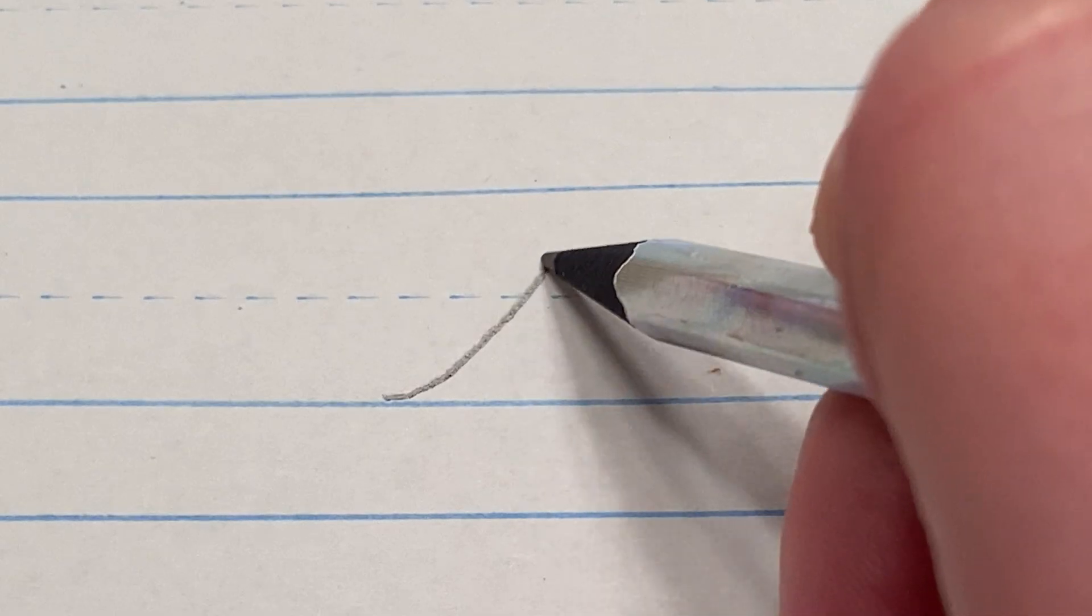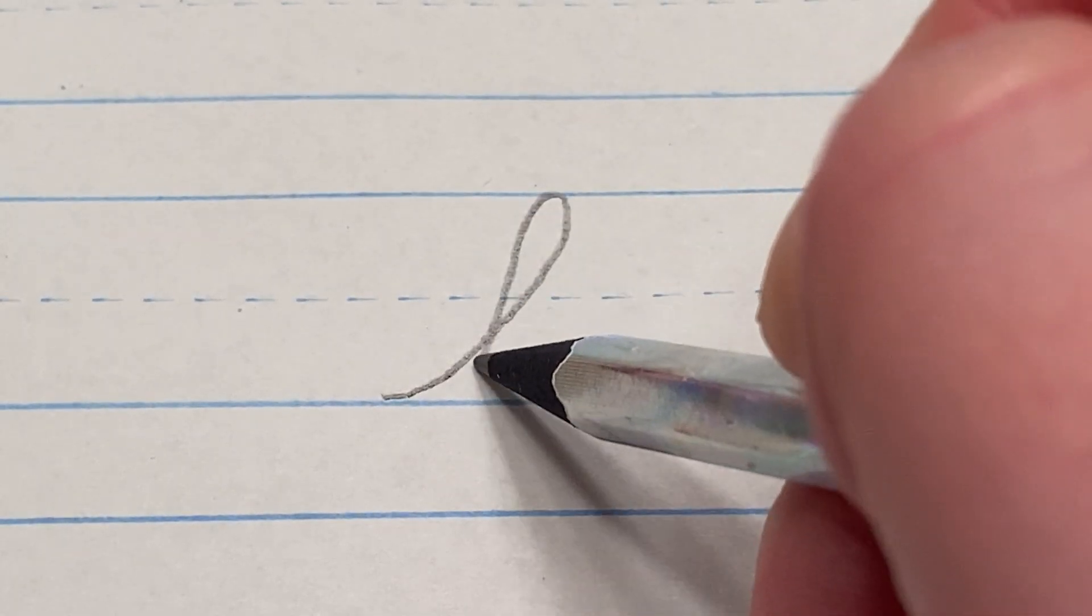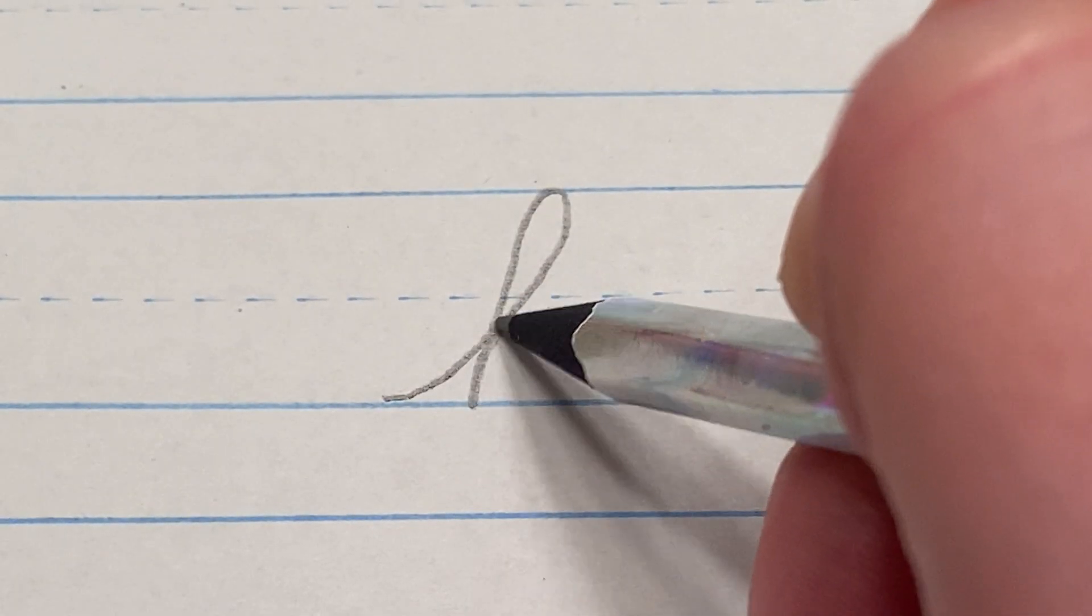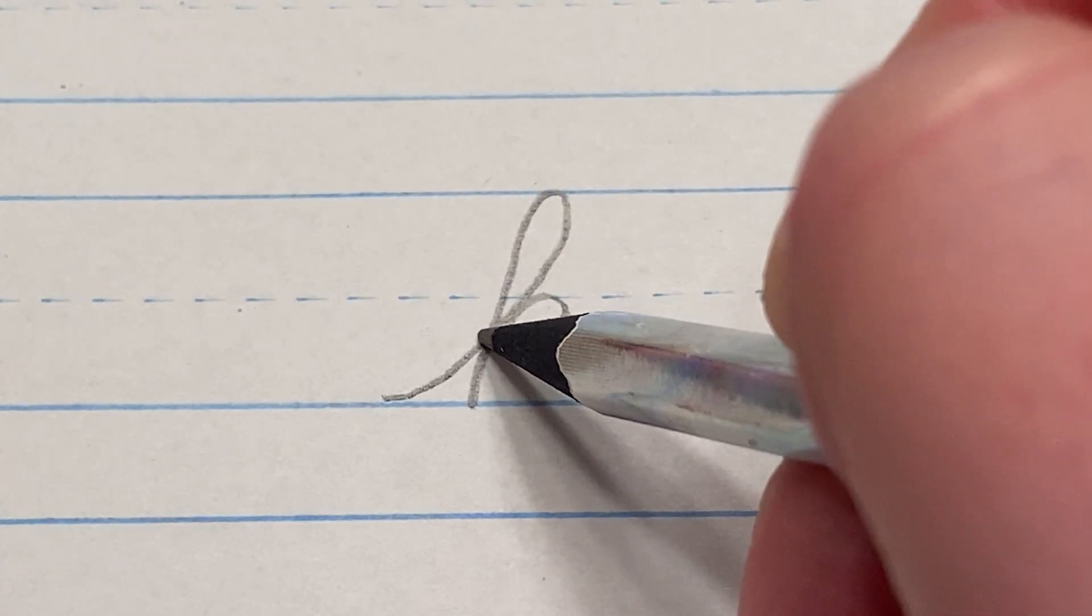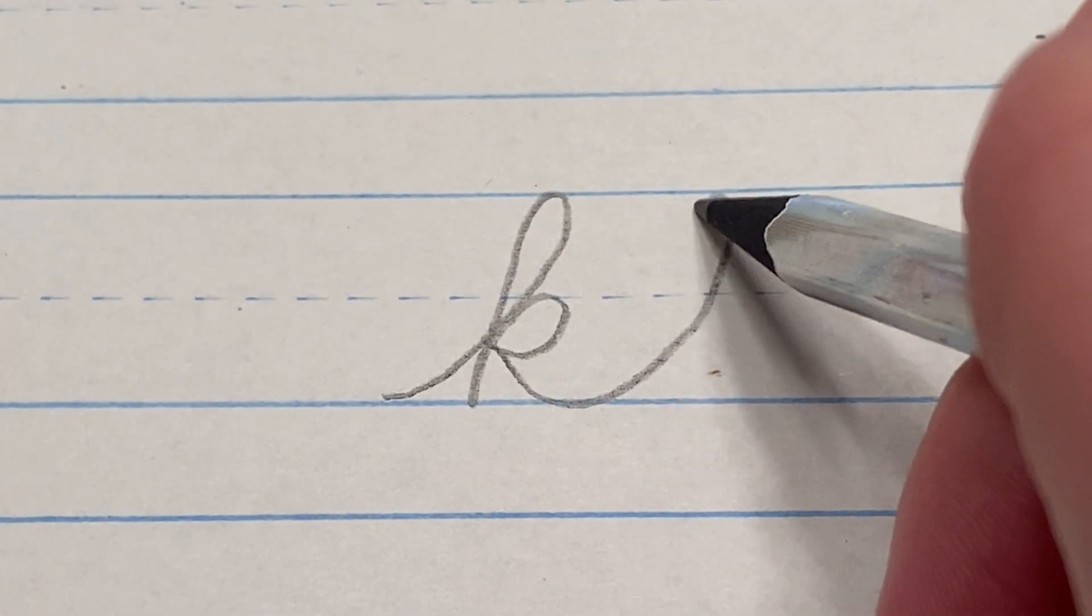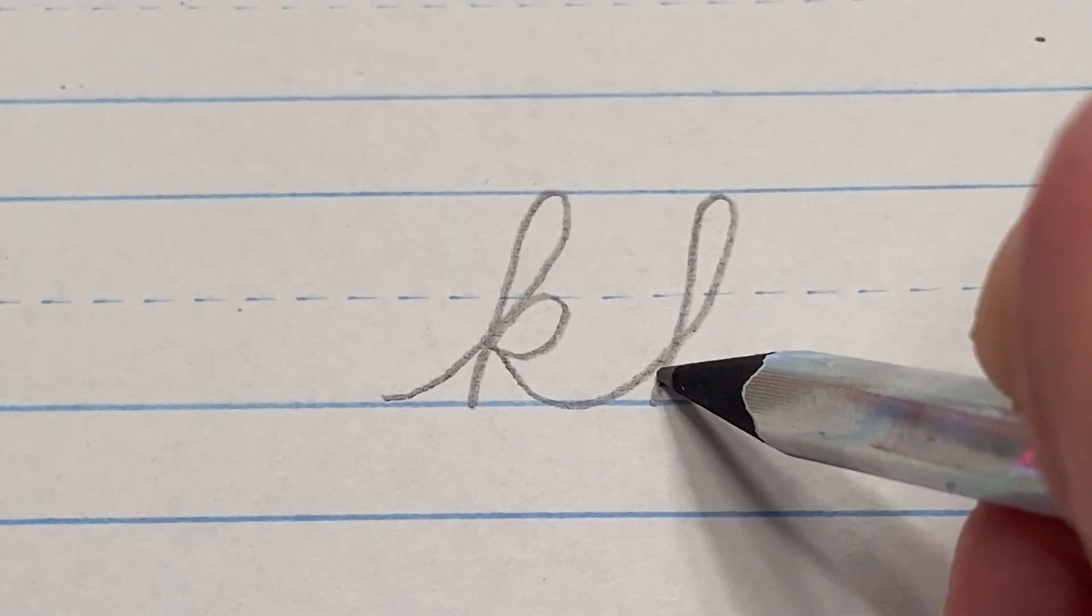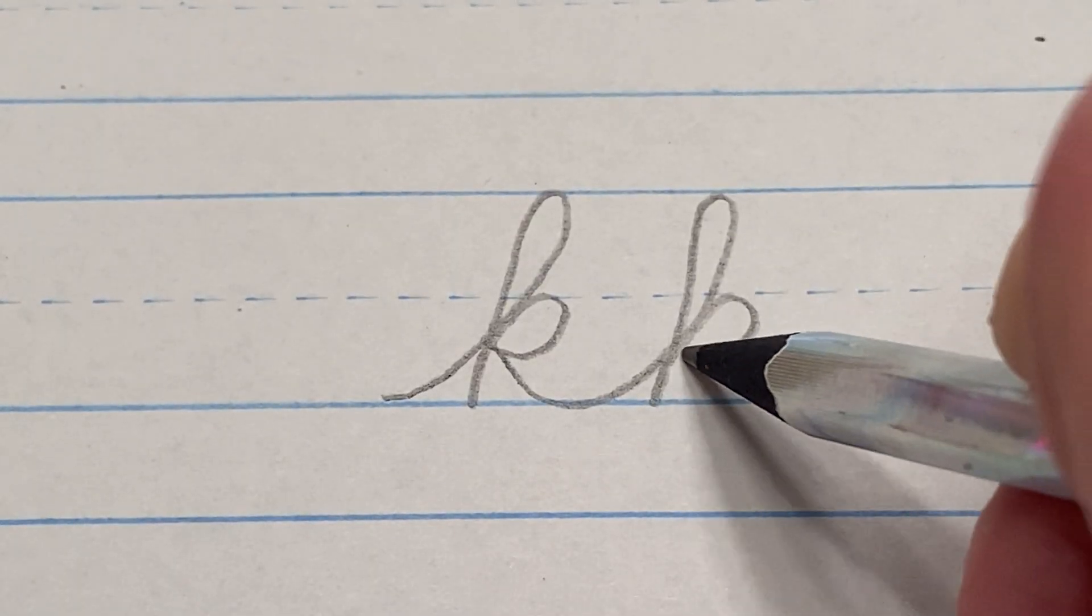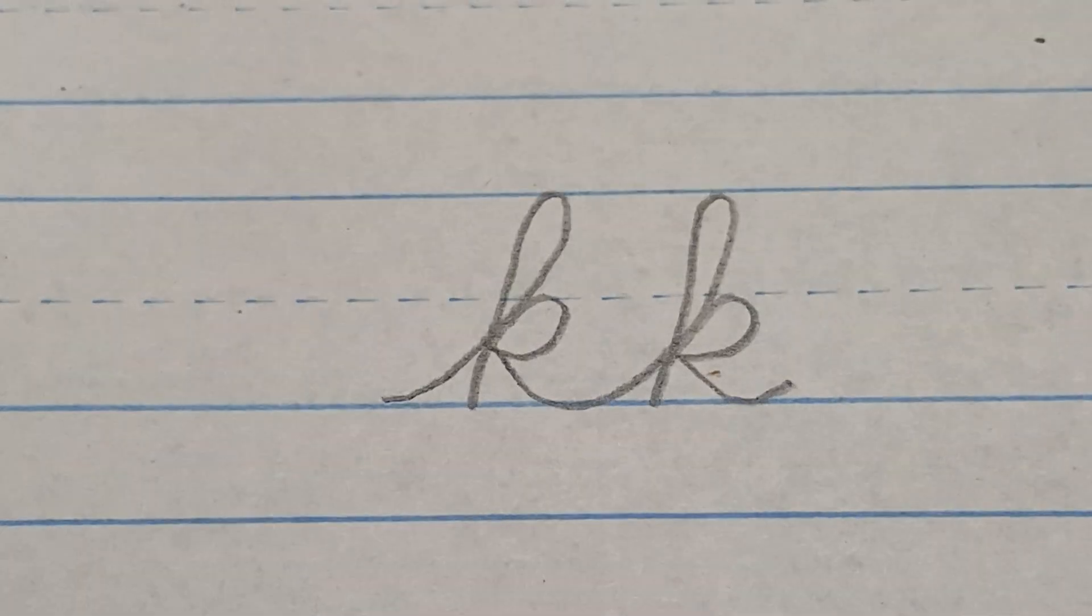For this letter, you start at the floor, swoop up to the top, down to the floor, back up along the same line, back in the middle, and then don't pick up your pencil. You just keep going into your next K. Up to the middle, down, that's where you would keep connecting.